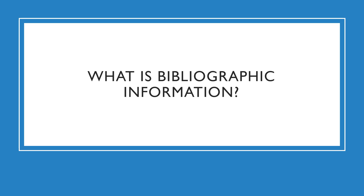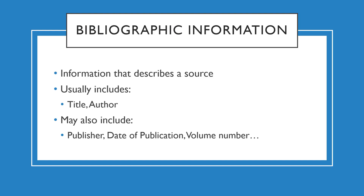So to start out, what is bibliographic information? Well, bibliographic information, sometimes called metadata, is the information that describes a source. It usually includes, at minimum, the author and title of the work in question, and may include more complex information such as publisher, date of publication, volume number, journal title, etc. The amount and type of bibliographic information you will need to create a citation depends on the type of resource you're trying to cite.